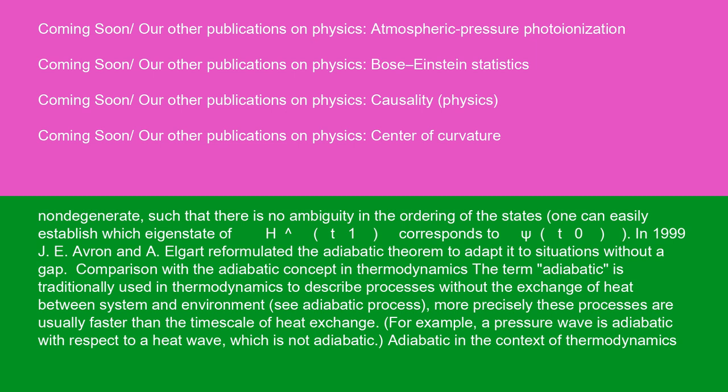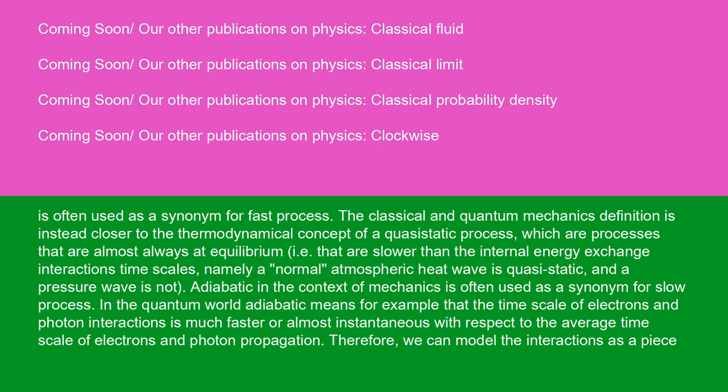Comparison with the adiabatic concept in thermodynamics: the term adiabatic is traditionally used in thermodynamics to describe processes without the exchange of heat between system and environment. More precisely, these processes are usually faster than the timescale of heat exchange. For example, a pressure wave is adiabatic with respect to a heat wave, which is not adiabatic. Adiabatic in the context of thermodynamics is often used as a synonym for fast process.